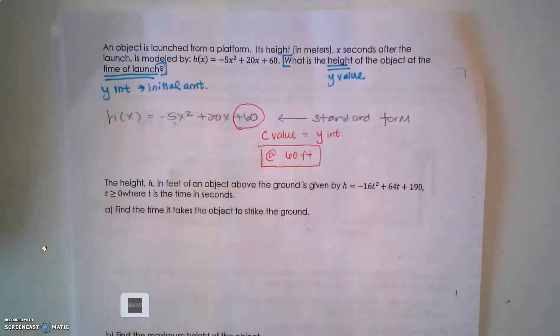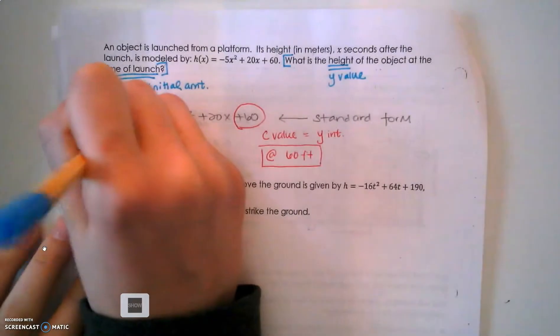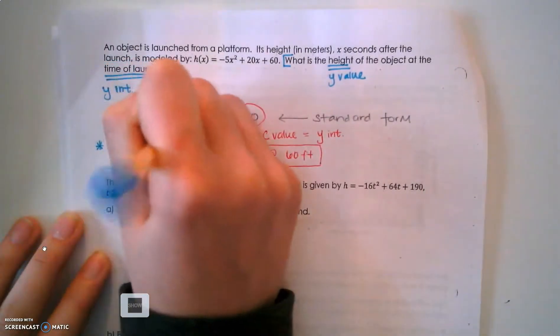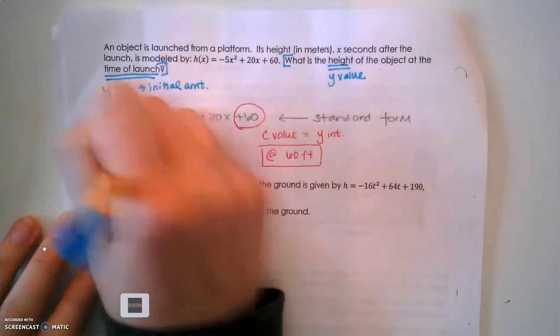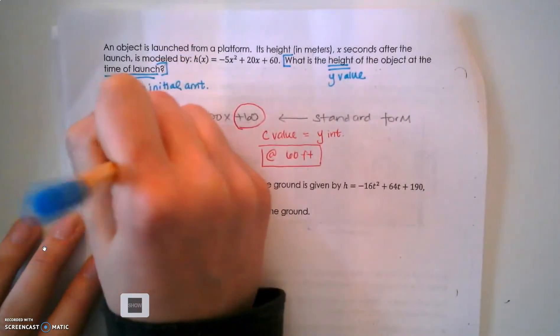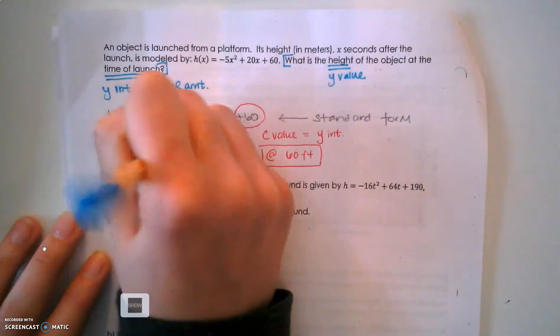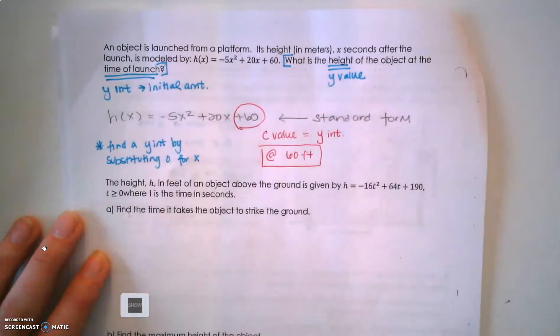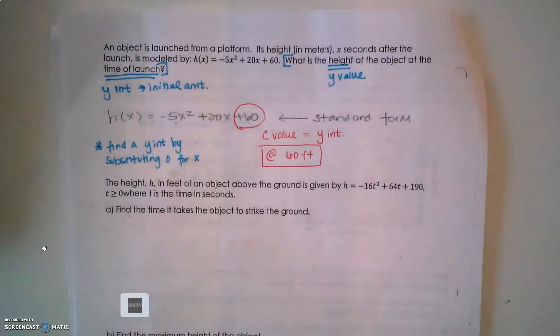If it wasn't in standard form, remember we find a y-intercept by substituting 0 for x and then solving.